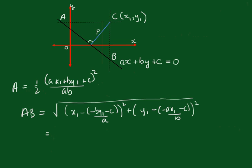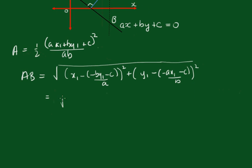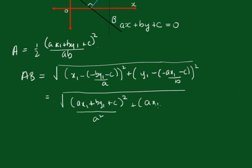And of course that becomes, you really have to be careful with these negative signs, it's going to be ax1 plus by1 plus c all squared over a squared plus the same thing, ax1 plus by1 plus c all squared, almost the same thing, over b squared.